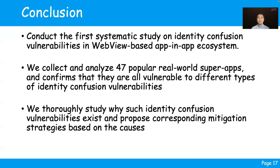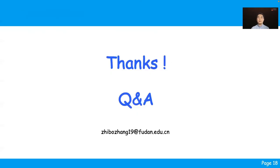In conclusion, in this paper we conduct the first systematic study on identity confusion vulnerabilities, and we collect and analyze 47 popular super apps to confirm these vulnerabilities. We thoroughly study the root causes and shed light on the future design of app-in-app ecosystems. Thank you for your time.